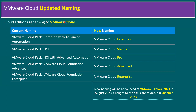Cloud Editions are being renamed to VMware Cloud. As we are aware, the current naming includes VMware Cloud Pack Compute with Advanced Automation, Complete VMware Cloud Pack, HCI, HCI with Advanced Automation, VCF Advanced, and VCF Enterprise — where VCF means VMware Cloud Foundation. These names have recently been updated, announced at VMware Explore 2023.